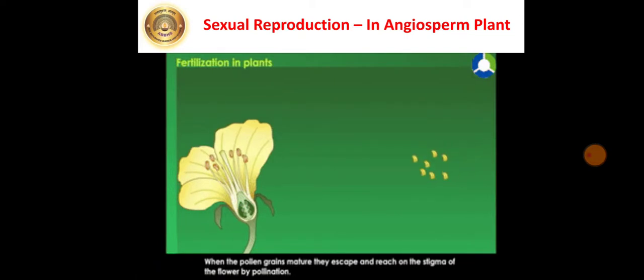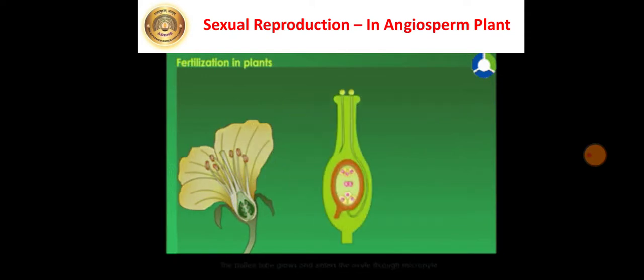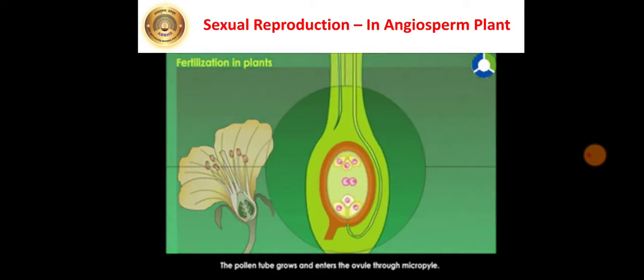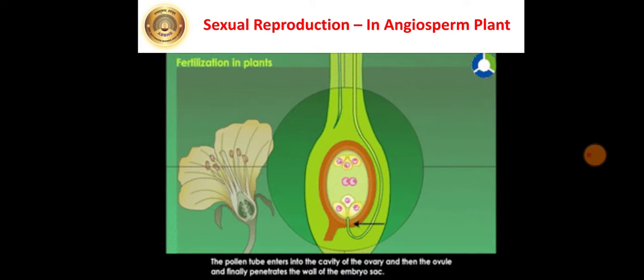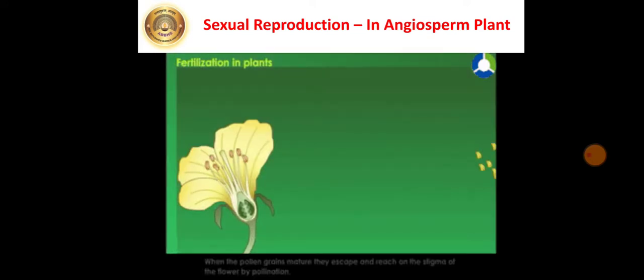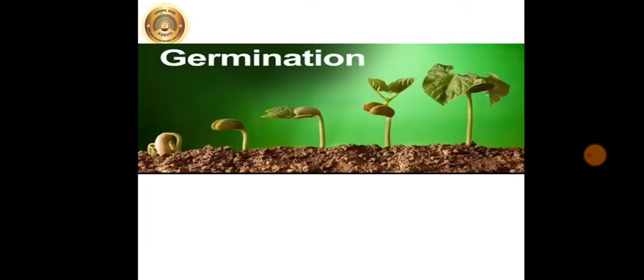Just observe here the diagram that it shows how actually the fertilization takes place in the angiospermic plants. Pollen grains fall on the stigma. Then the pollen tube forms, which passes towards the ovary. In the ovary, the ovules are there, and where the union of pollen grain, that is male gamete and female gamete takes place.